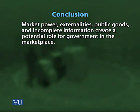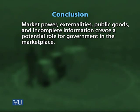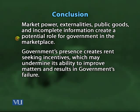In conclusion, market power, externalities, public goods, and incomplete information create a potential role for government in the marketplace. However, government interventions create rent-seeking incentives which may undermine its ability to improve matters, resulting in government failure. So while government intervention aims to resolve market failure caused by externalities, public goods, market power, and incomplete information, it may also result in government failure through rent seeking.